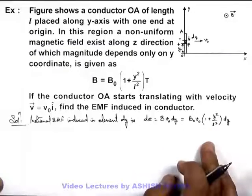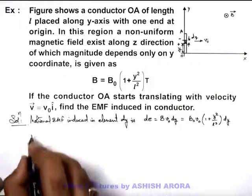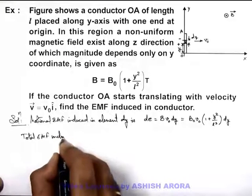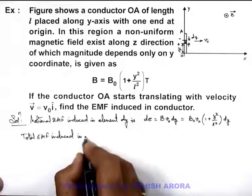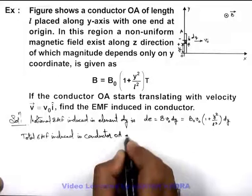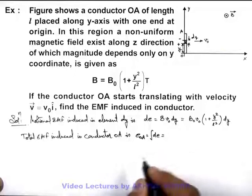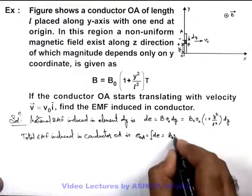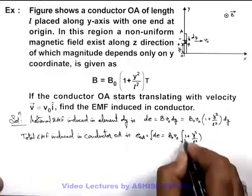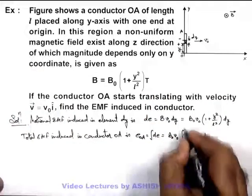For such small EMF dε, all these are in series, so we can write: total EMF induced in conductor OA—the total EMF across OA can be written as integration of dε. That's B₀V₀ (constant) times integration of (1 + y²/l²)dy, and we'll integrate in limits for the length of this conductor, which is from 0 to L.